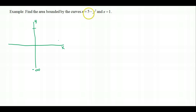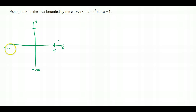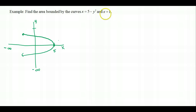The vertex is at x = 5 on the x-axis and the parabola opens toward negative x values — to the left. The line x = 1 is a vertical line. We want to find the area bounded by these two curves: the leftward-opening parabola x = 5 − y² and the vertical line x = 1.